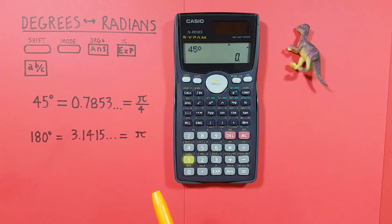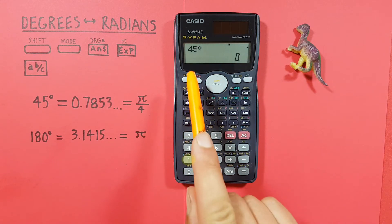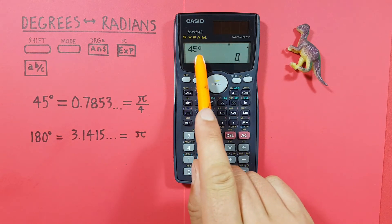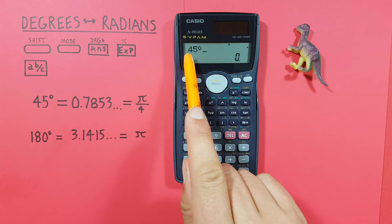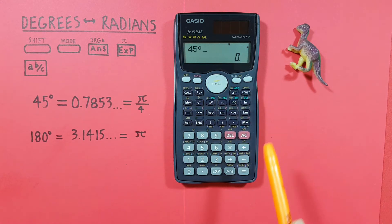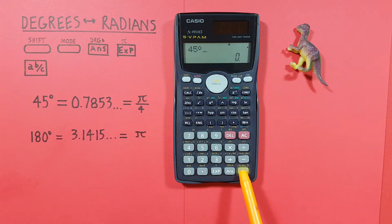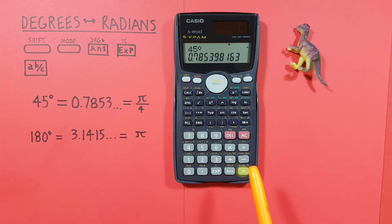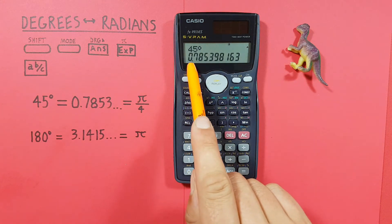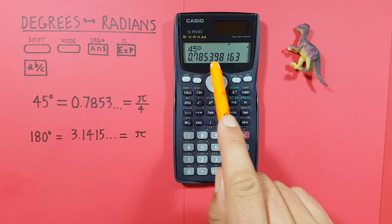Since we're starting with degrees we want to press number 1 for D. Now we see a degrees symbol after our 45, so we have 45 degrees. Now if we press equals we see we get a result of 0.7853 etc.